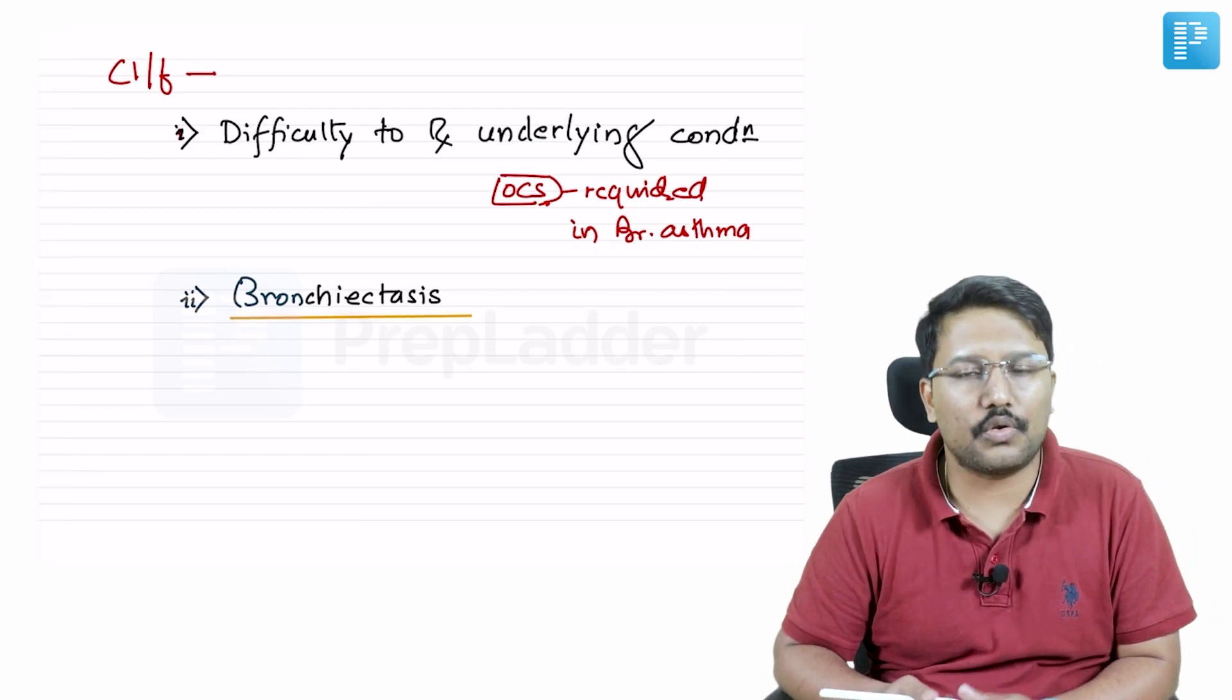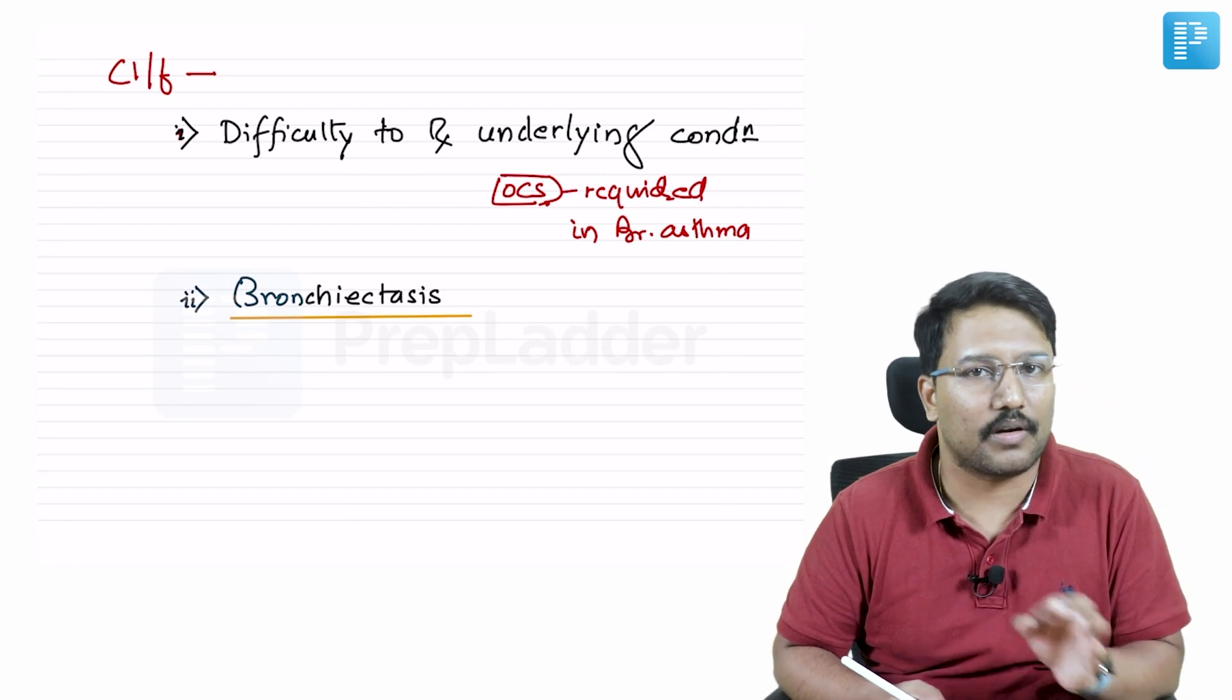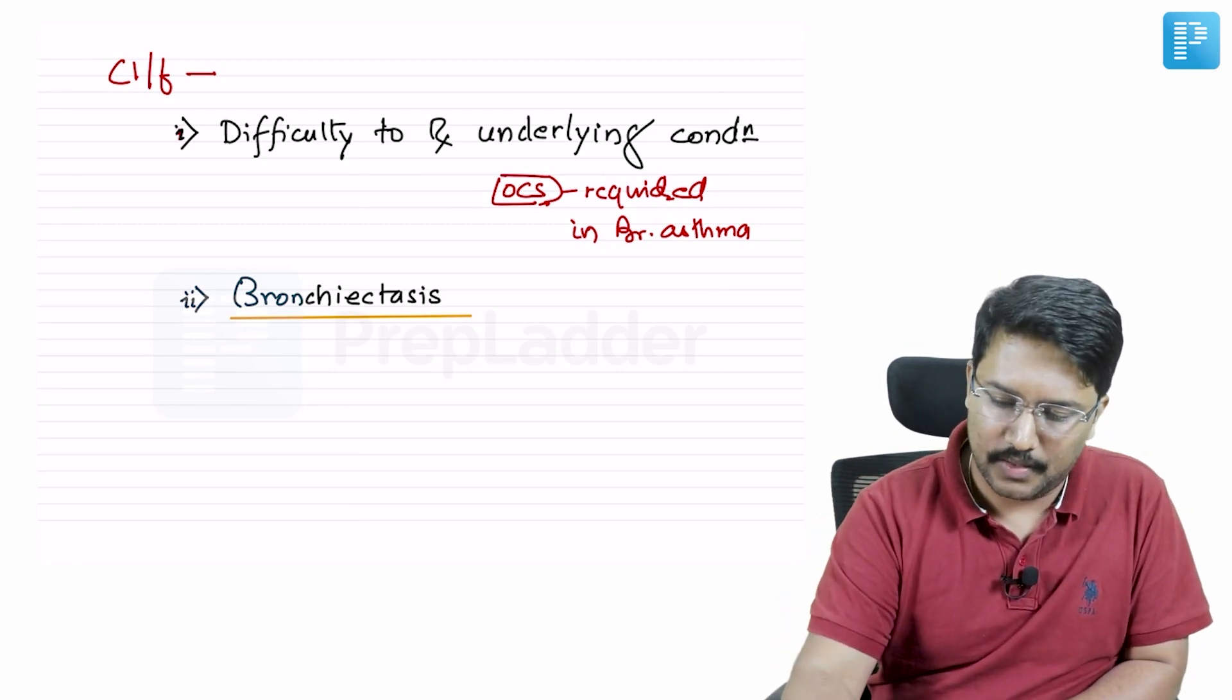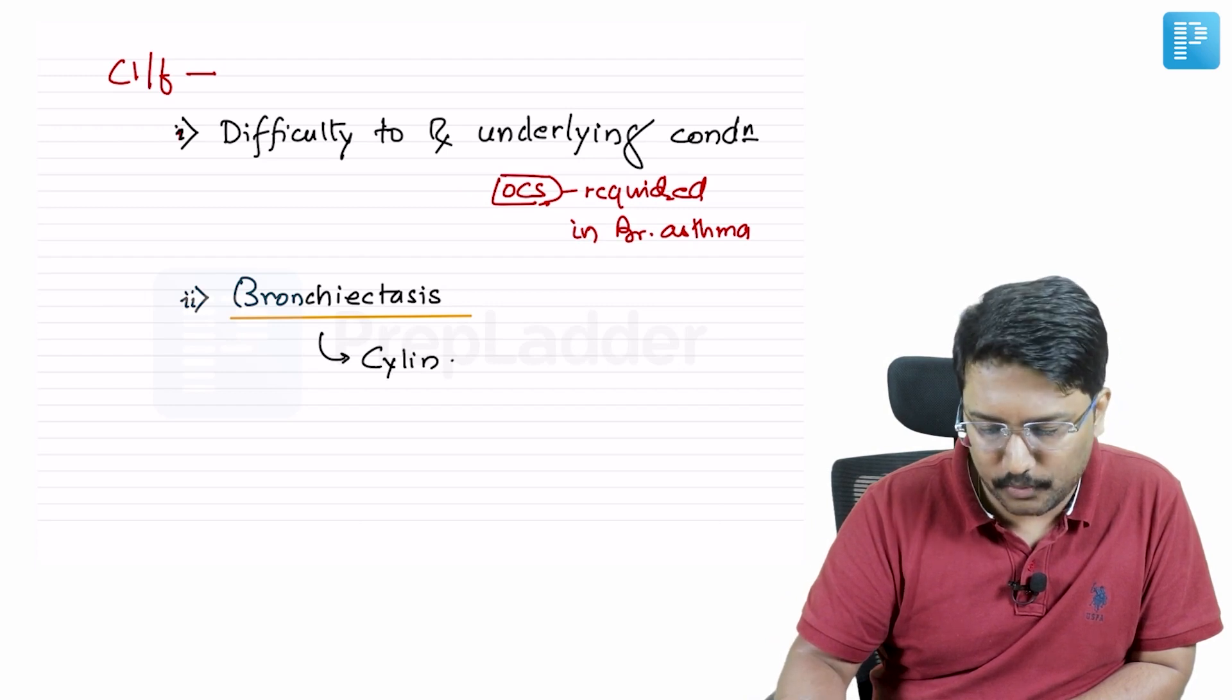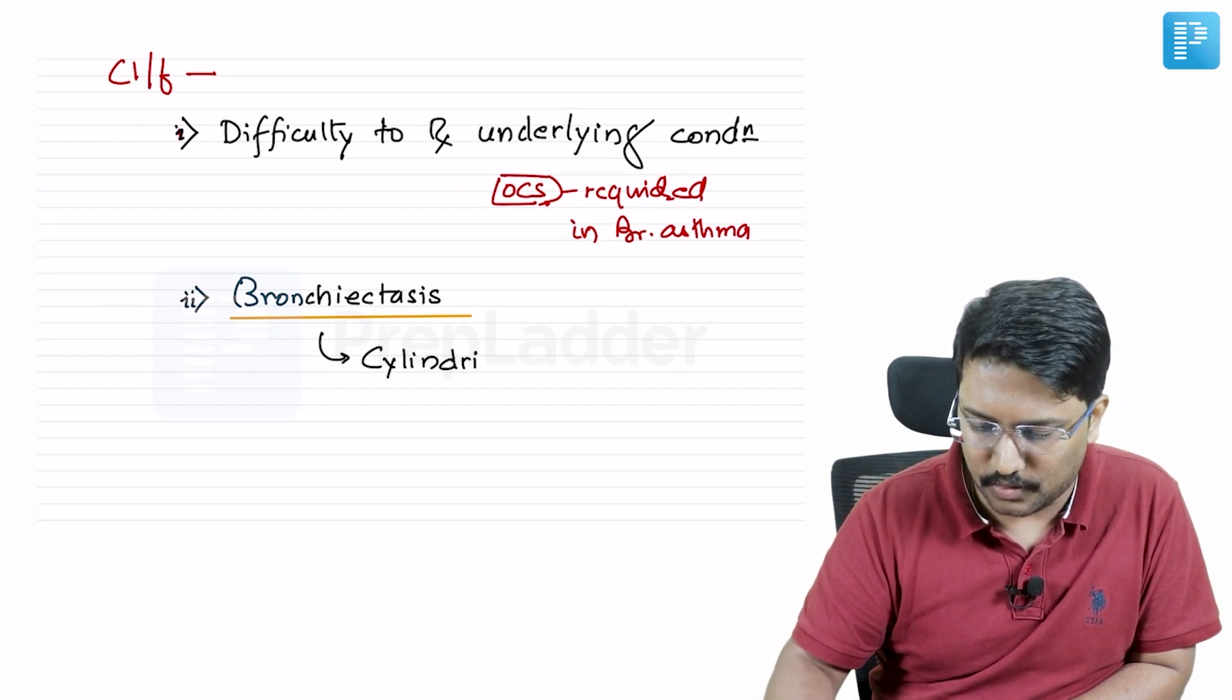When you talk about bronchiectasis, you should also know what is the nature of bronchiectasis and what are the segments of the lung that are affected. Bronchiectasis here is mostly cylindrical—we are mostly talking about cylindrical or what is called tubular bronchiectasis.